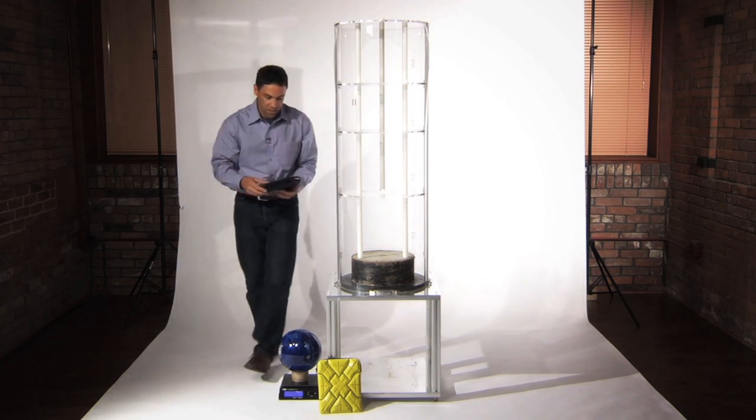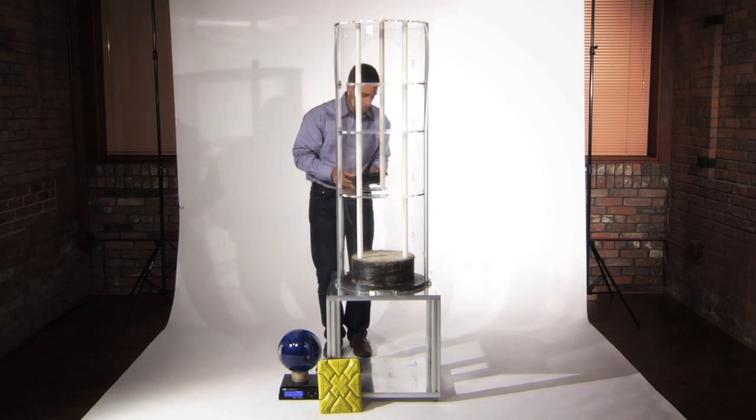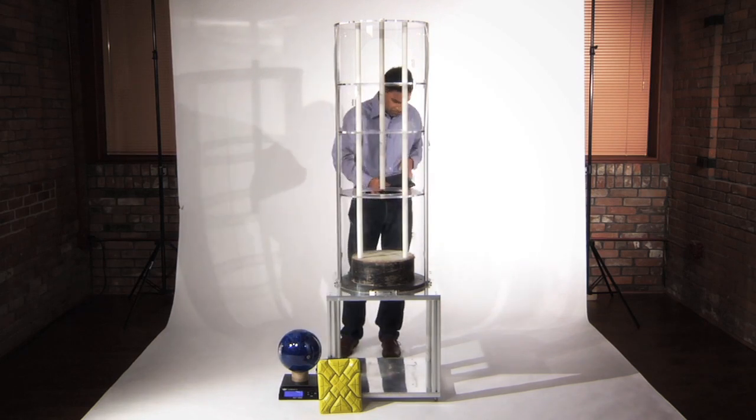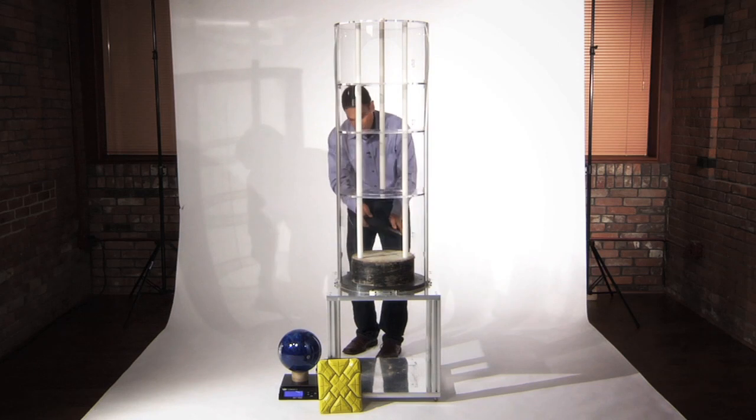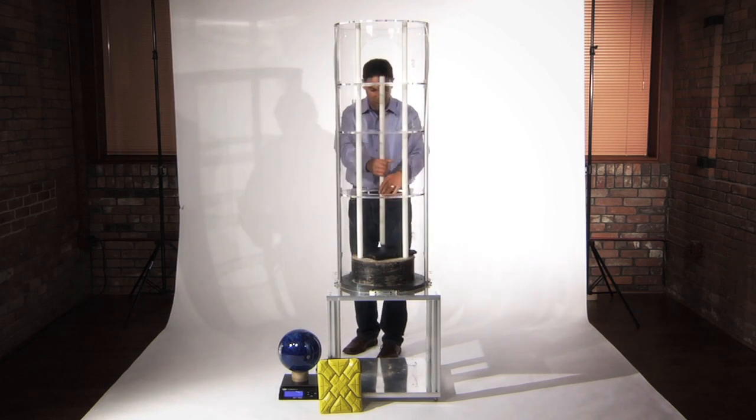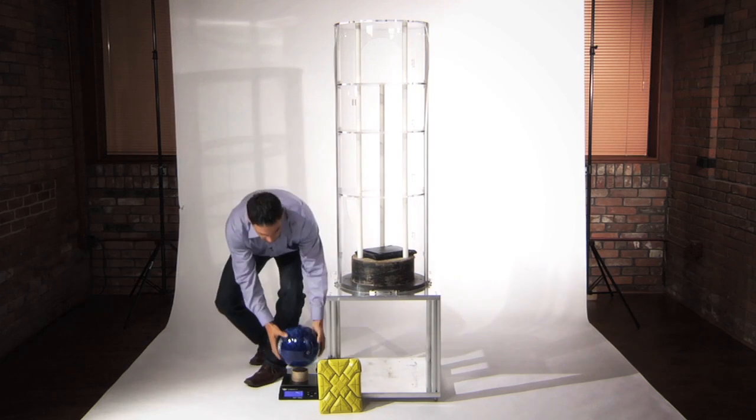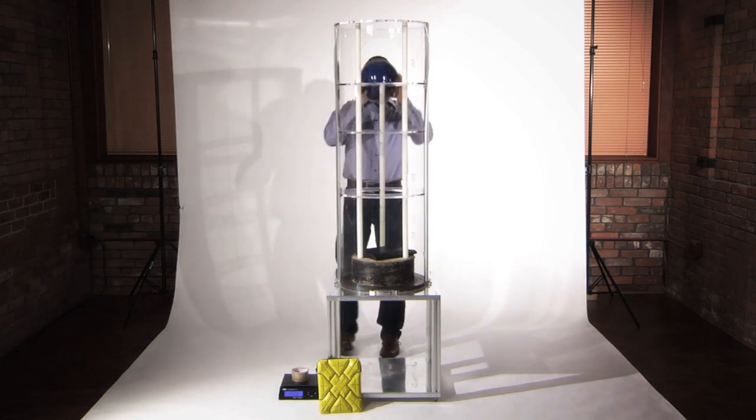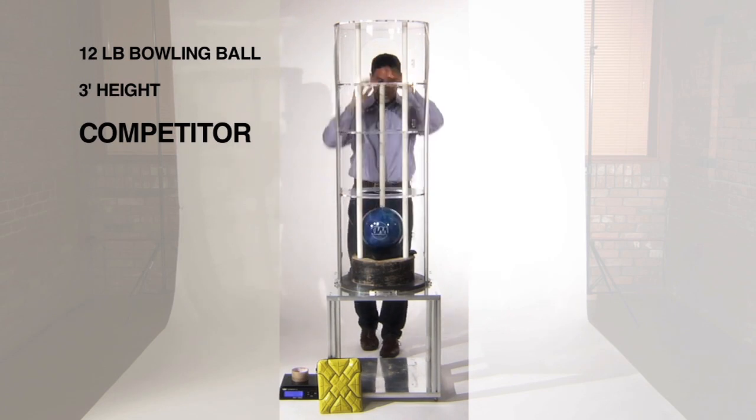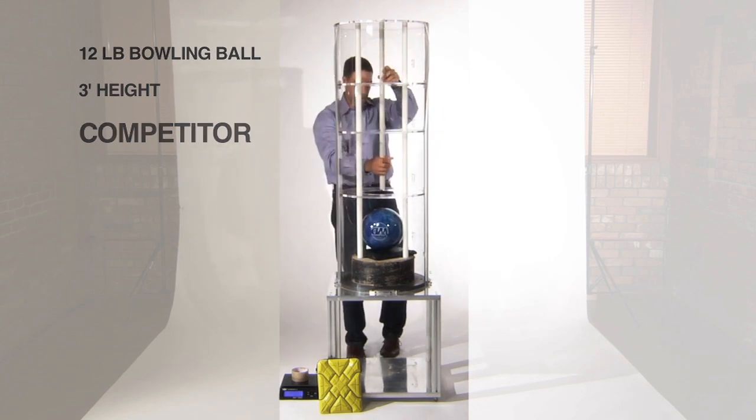To start with in this case, we're going to put the competitive hard shell case face up on a concrete slab side, take the 12-pound bowling ball from a three-foot height and see what the results are.